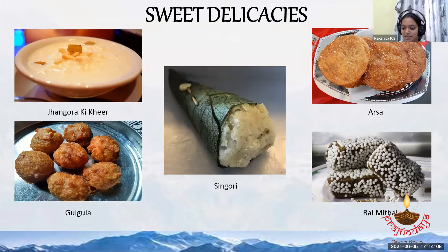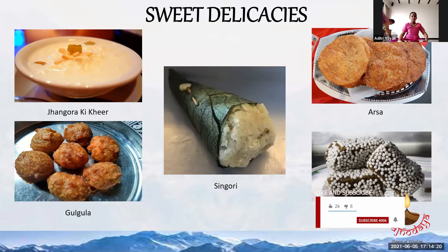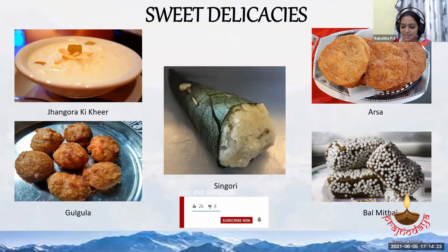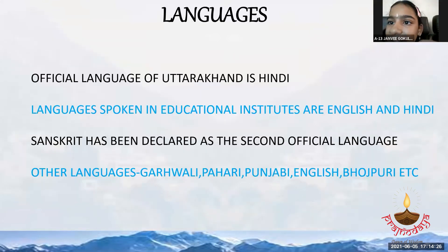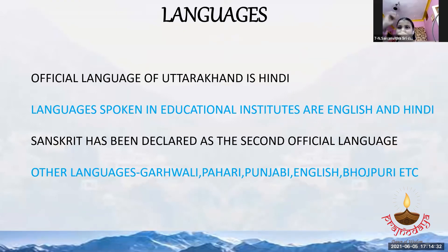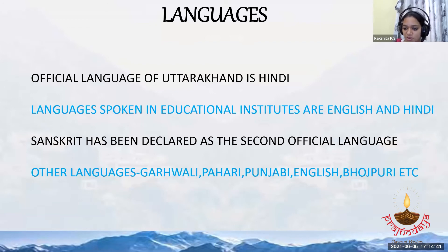Do you all know the official language of Uttarakhand? We all have an official language, right — in every state. The official language of Uttarakhand is Hindi. Sanskrit is the second official language, as declared by the government. English and Hindi are taught in institutional centers. Other languages spoken include Garhwali, Pahari, Punjabi, Bhojpuri, etc.